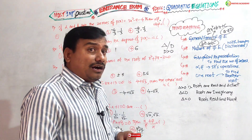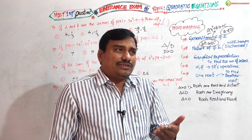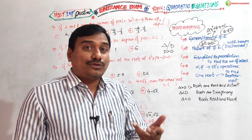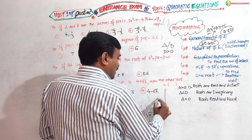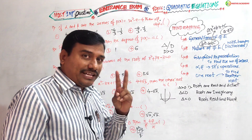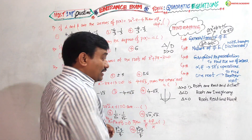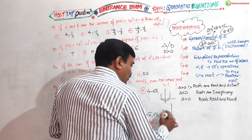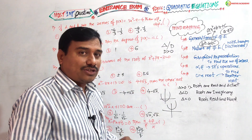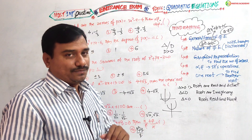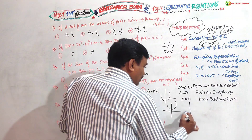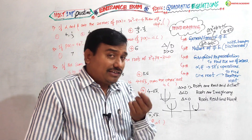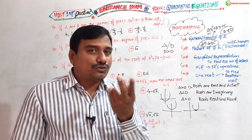Graphical representation to find the roots: if delta is greater than zero, this parabola will intersect the x-axis at two distinct places. If delta is less than zero, this parabola will not intersect the x-axis at any place — meaning it does not have any real roots. If delta equals zero, it will touch the x-axis at one place only.